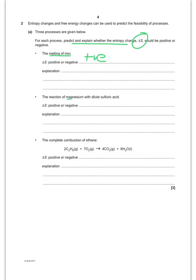The reaction of magnesium with dilute sulfuric acid. Well, this is also going to be positive. And the main reason is, well, first of all, you've got magnesium solid becoming magnesium 2 plus ions. So it's dissolving.